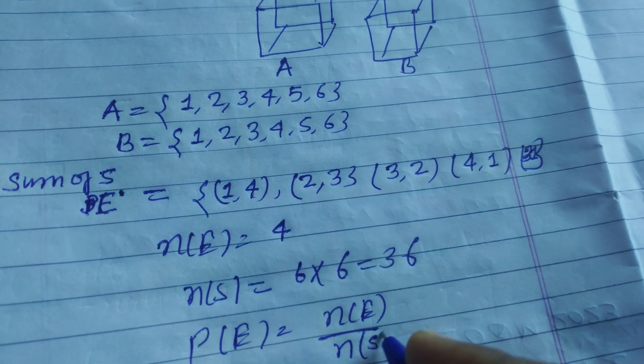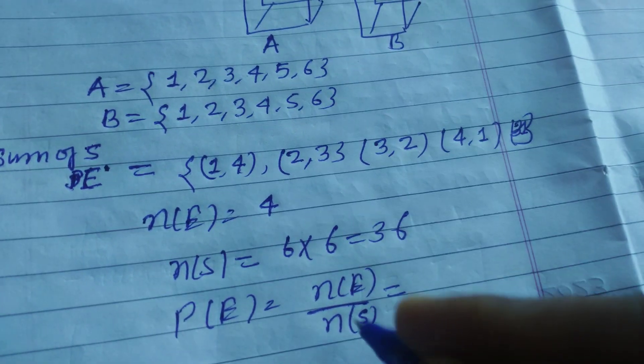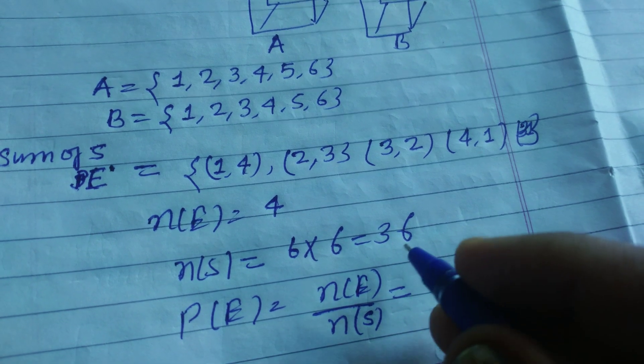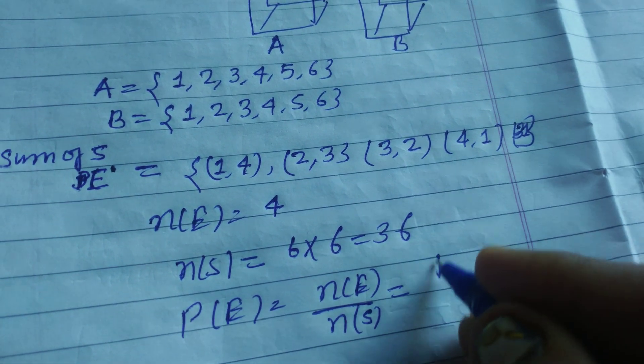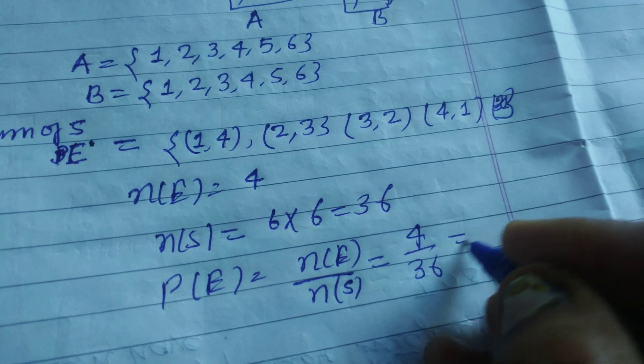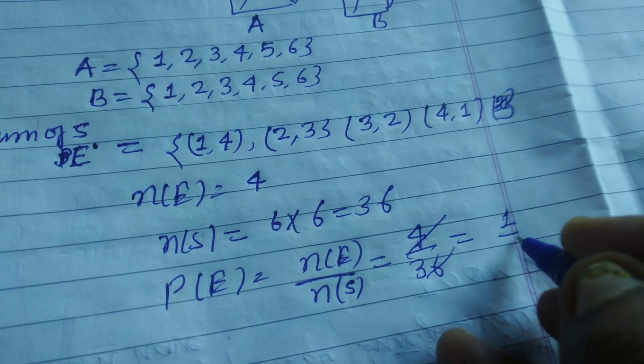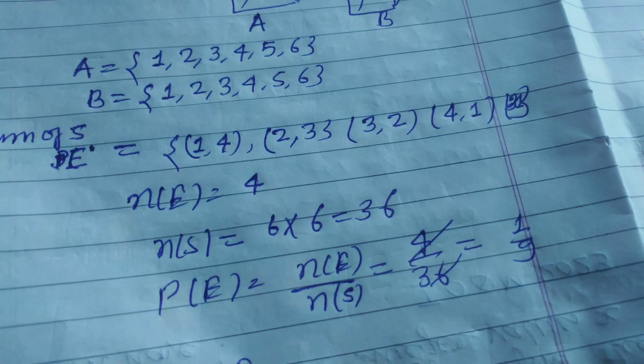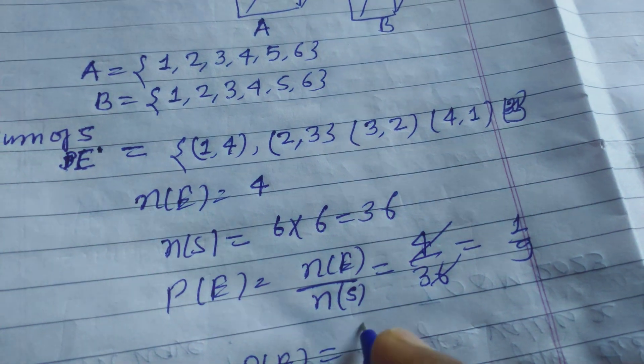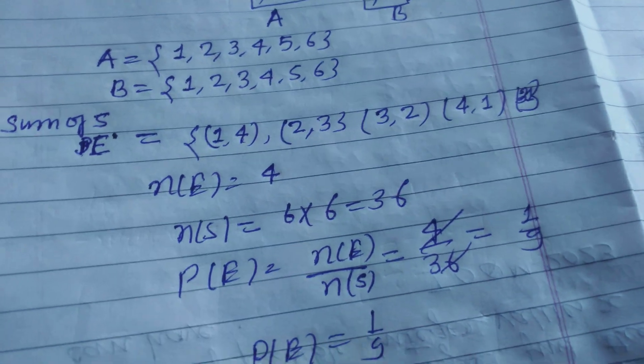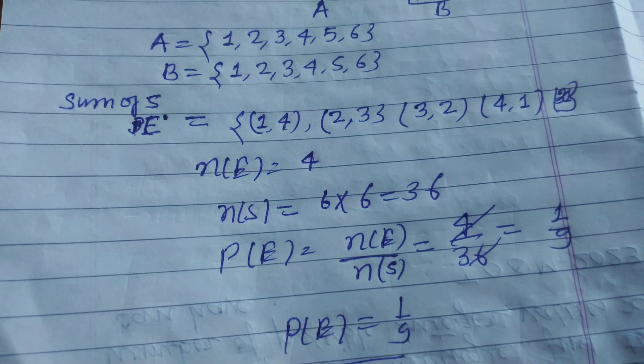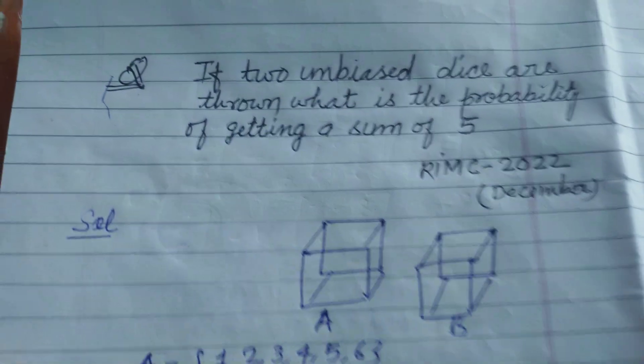So this is 4 upon 36, which is 1 upon 9. So probability of getting sum of five is 1 upon 9. This is the answer of the question. I hope you got it, please like the video, subscribe the channel, thanks.